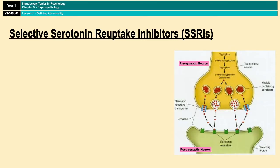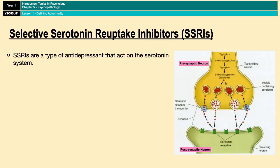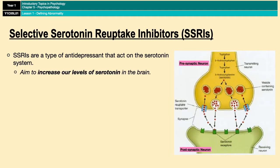SSRIs are a type of antidepressant that act on the serotonin system. If you think back to the role of neurotransmitters in OCD, which we covered in our last lesson, you'll remember that it's suggested that low levels of serotonin lead to the condition. Bearing that in mind, the aim of SSRIs is to increase levels of serotonin in the brain.